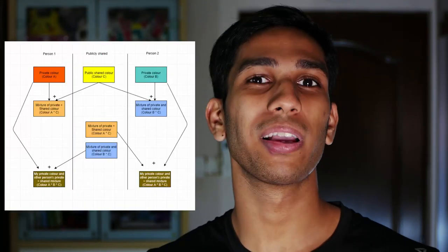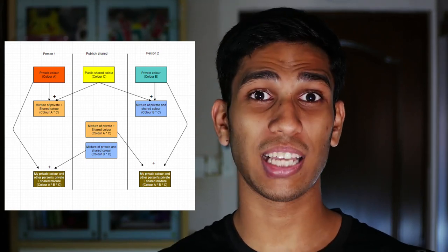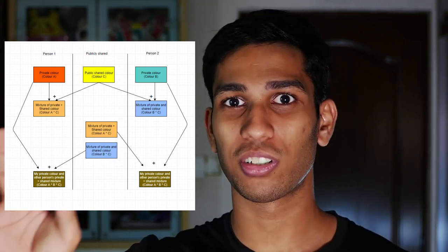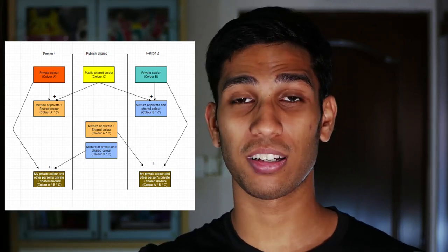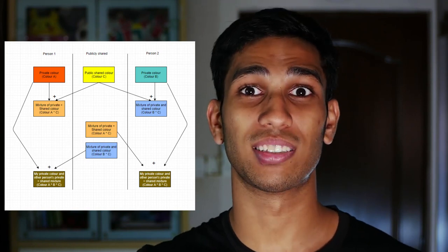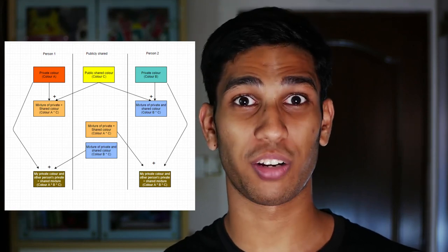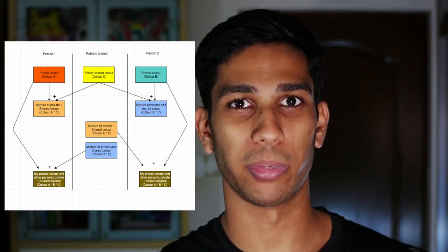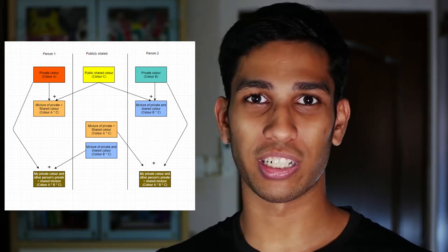What we're going to do next is the real secret to encryption. We're going to mix our private color with the other person's mixture. I'm going to take his mixture of his personal color and the public color, and mix that with my private color. He's going to do the same thing — he'll take my mixture and mix it with his private color. What we get is we actually get the same color now. This new mixture is not going to be shared — it's our personal mixture, this is our code. As you can see in the flowchart with ABC, the colors we've created are now identical.